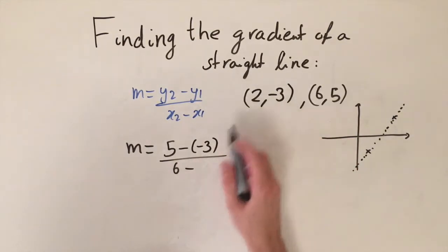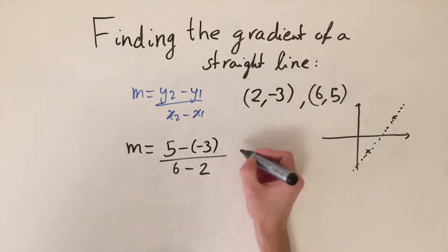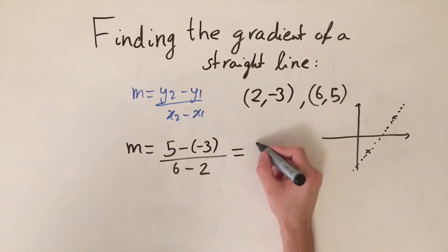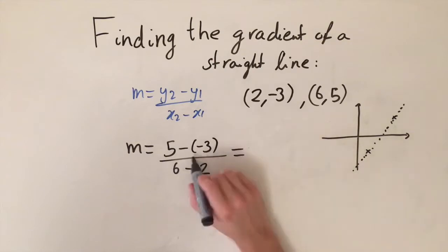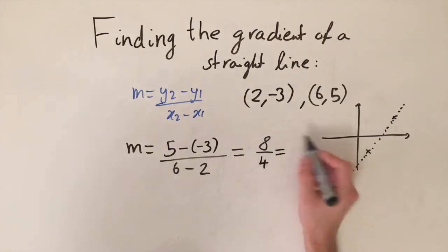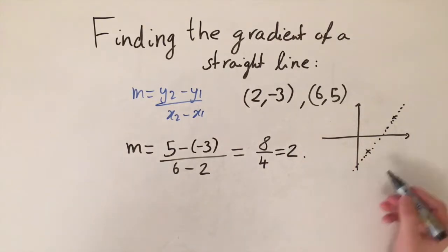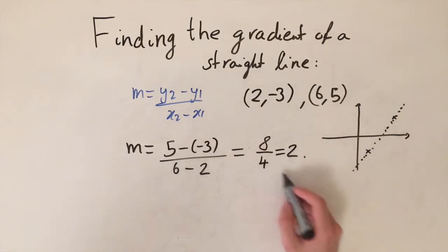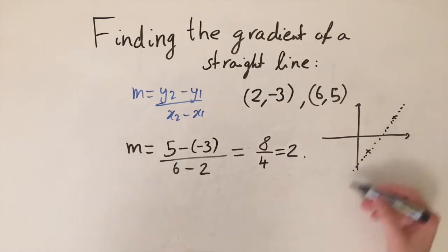And then we just simplify this. So we have the double negative turns into a plus, so we have 5 plus 3 on the top which is just 8, and on the bottom we have 6 minus 2 which is 4. So this simplifies very nicely to 2, and this is indeed positive how we predicted. So now we have a numerical value of how steep this line goes upwards.